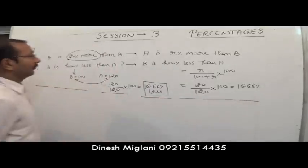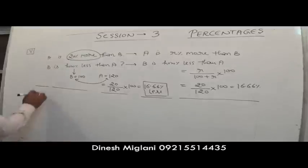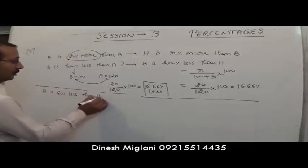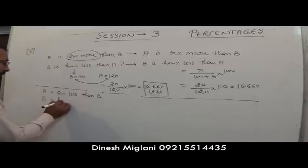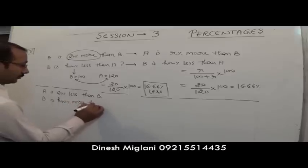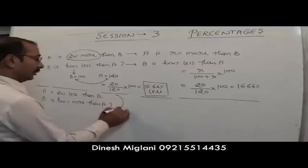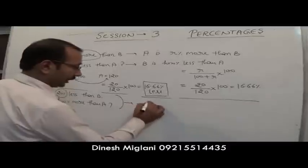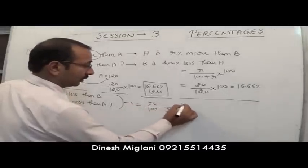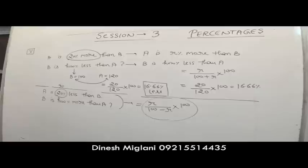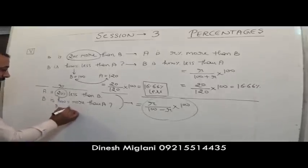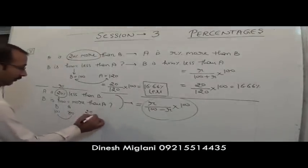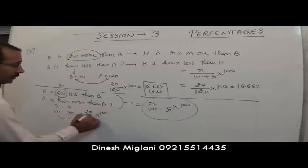Similarly, if instead of increase, a decrease is given — A is 20% less than B — we have to find by what percent B is more than A. The formula becomes R/(100 − R) × 100. Assuming B = 100, A = 80. B is 20 more than A: 20/80 × 100 = 25%. Putting R = 20 in the formula also gives 25%.